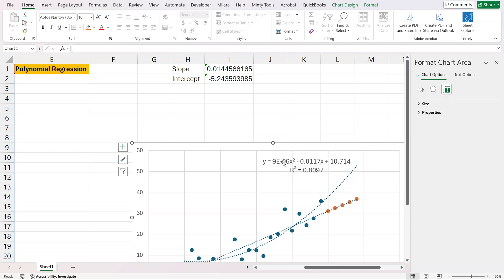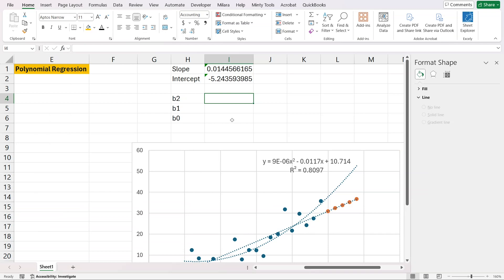So now we have the variables B2, B1 and B0. Since those are really small, I cannot take them from here. So we'll have to calculate them. B2, B1, B0. We'll use a combination of index and linest, two functions in Excel.